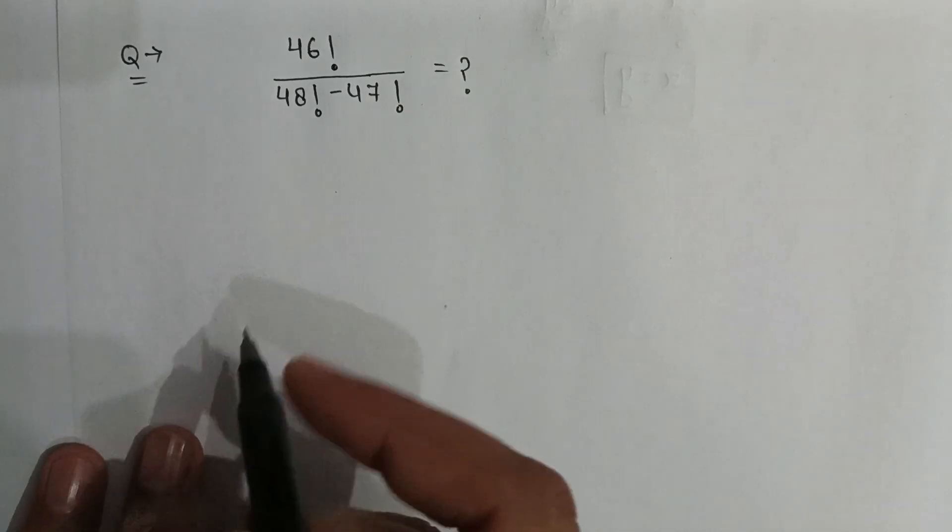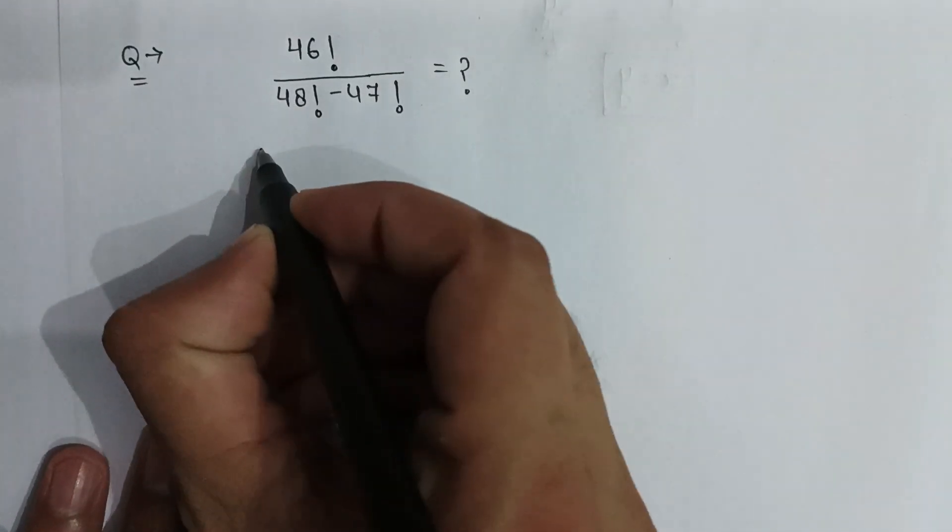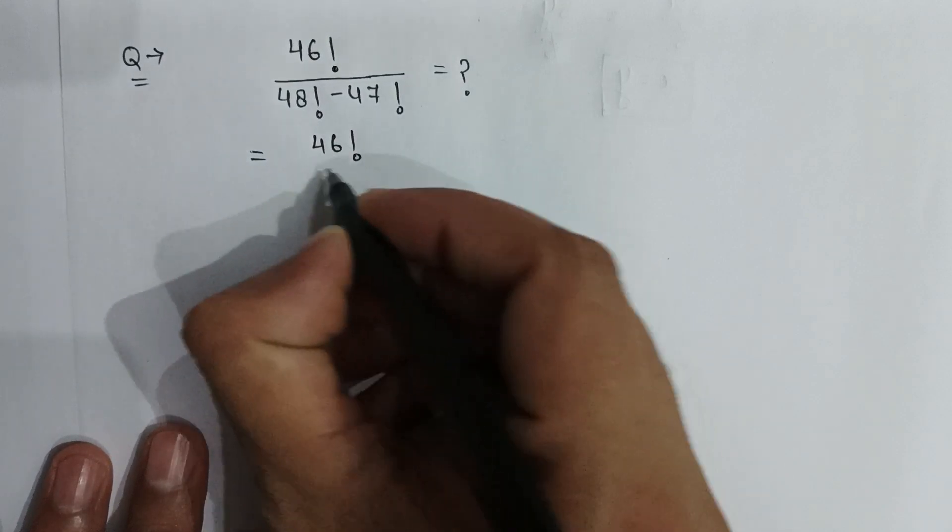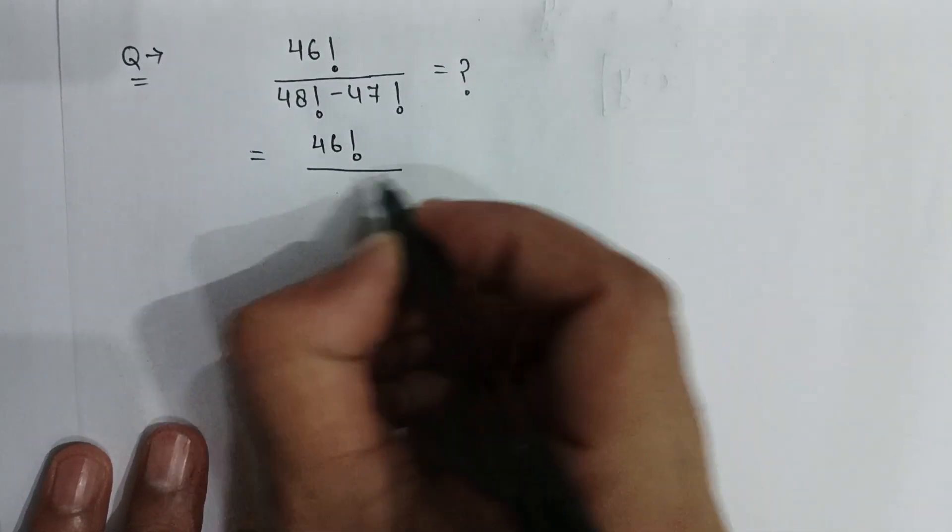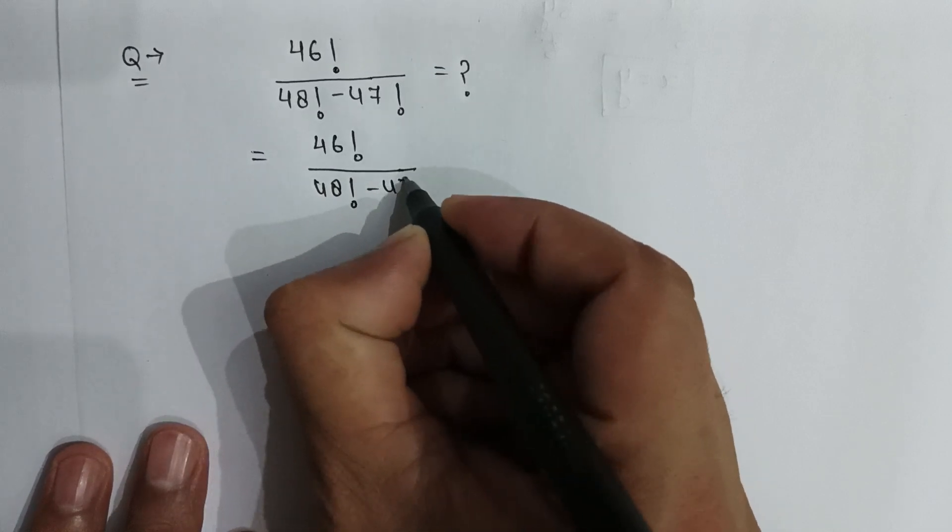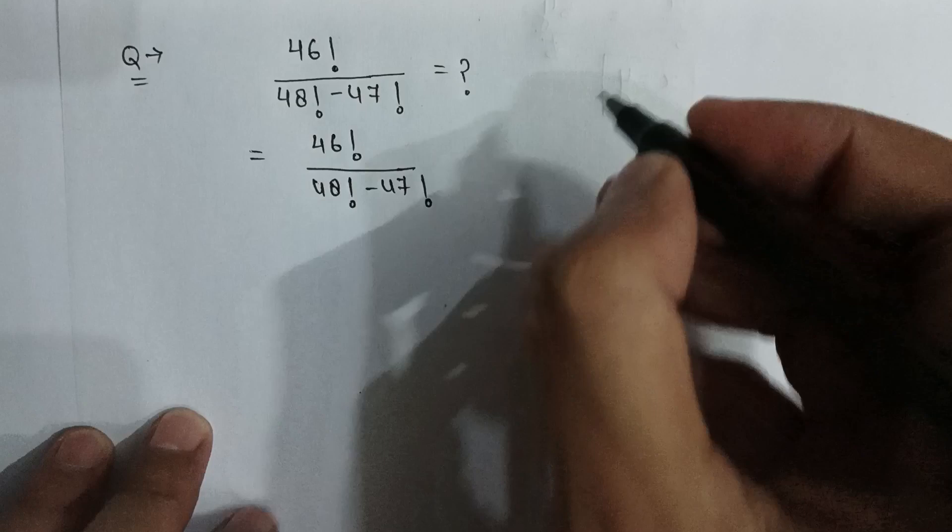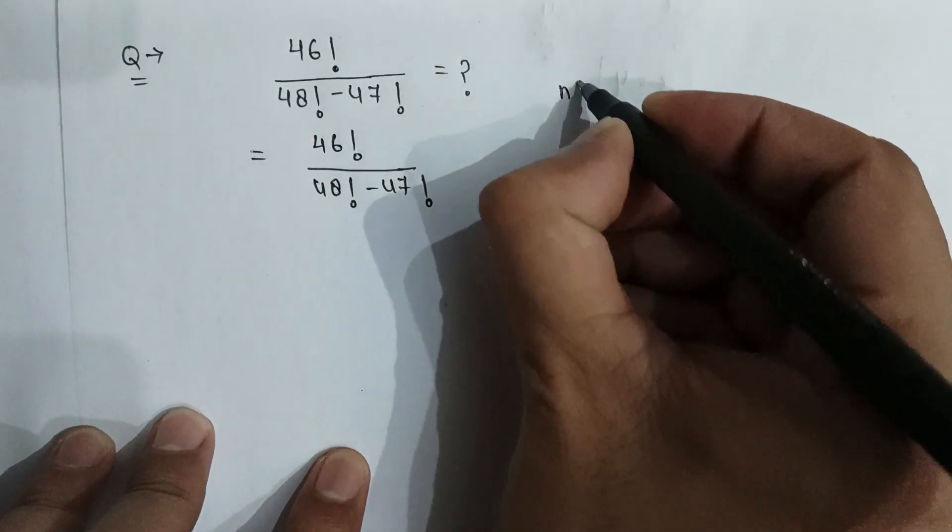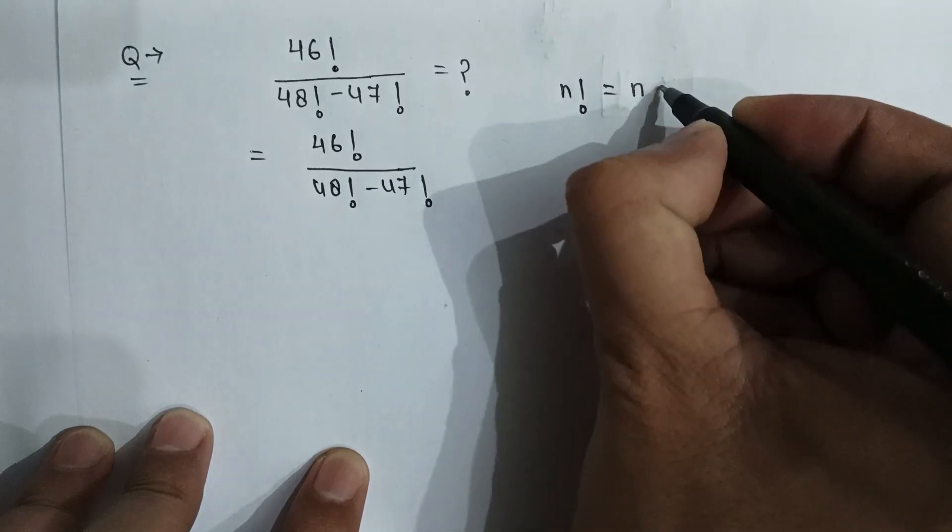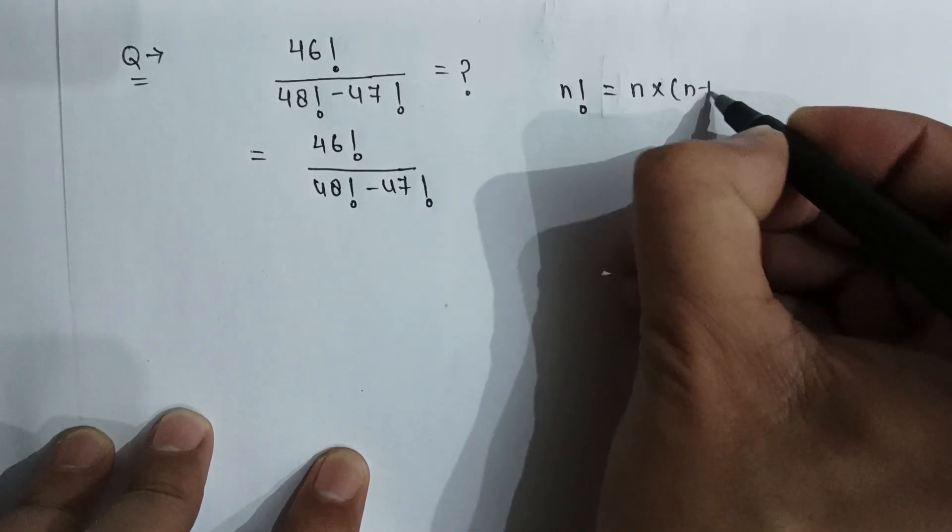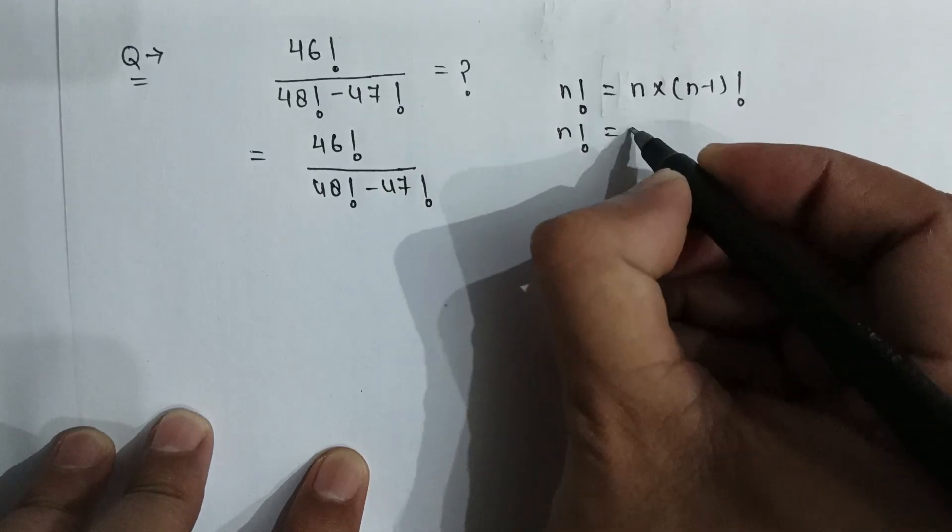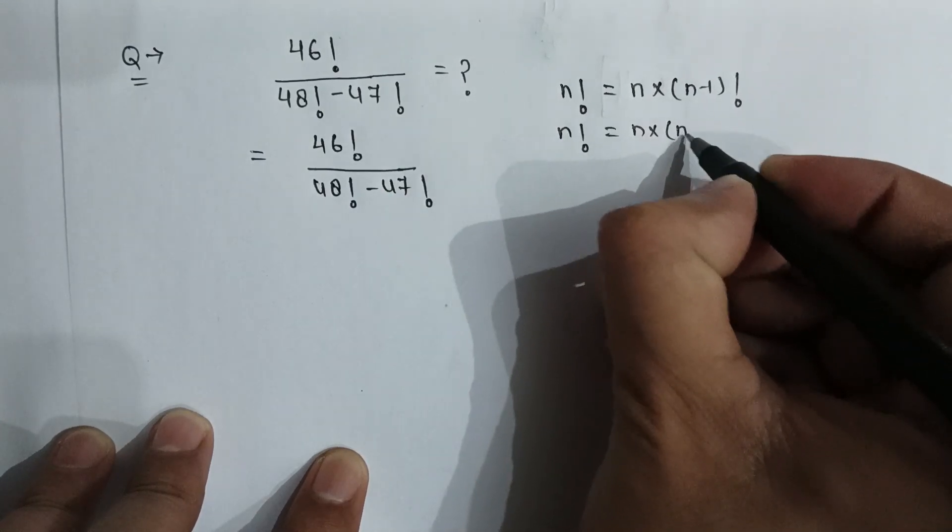Here is a very nice factorial problem. It is 46 factorial divided by 48 factorial minus 47 factorial. As we know that if n factorial is written, then it can be written as n multiply by n minus 1 factorial, or it can be written as n multiply by n minus 1 multiply by n minus 2 factorial.